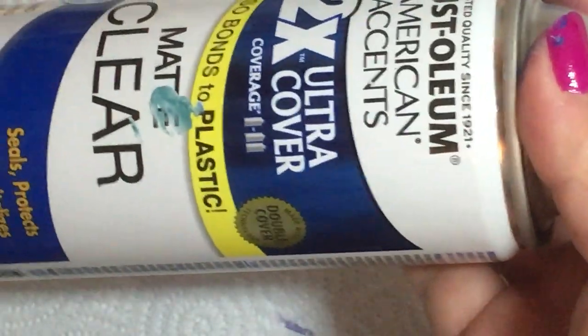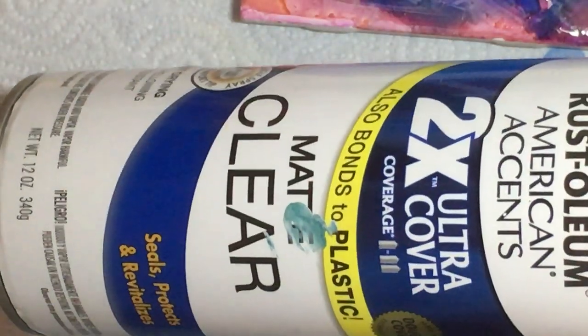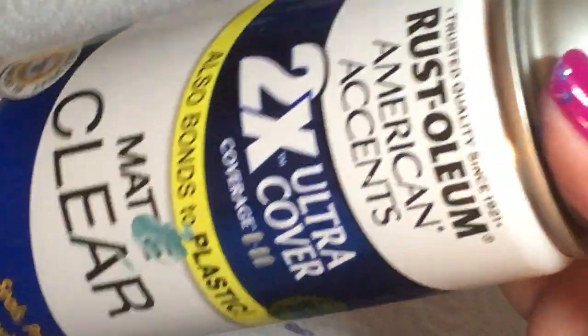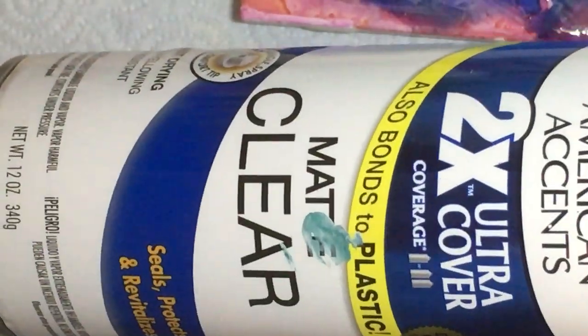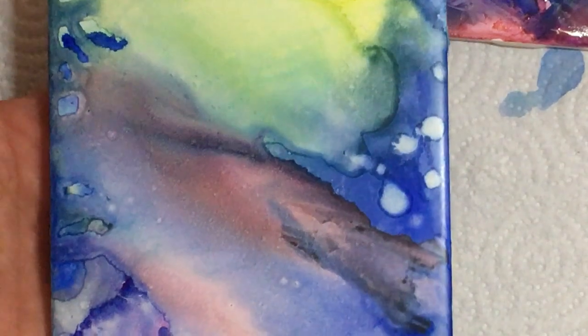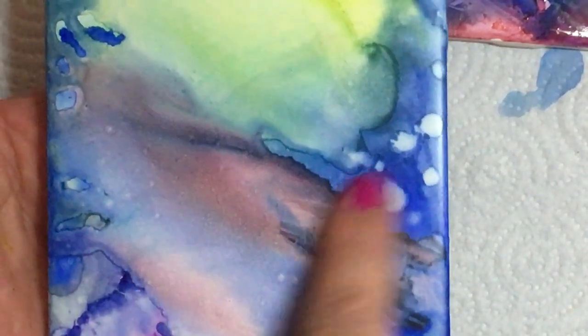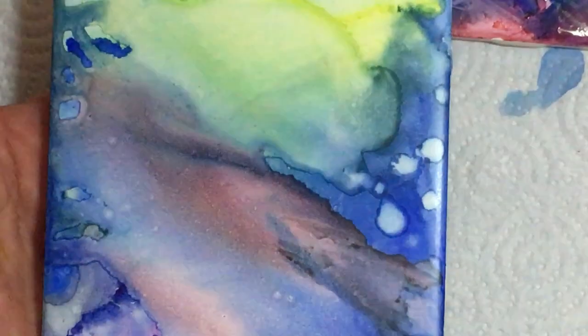And I sprayed it with this stuff here. That's 2X Ultra Cover Rust-Oleum Matte Clear. Now this is what I used. Probably any clear spray would work. And I did it on this one, and this one I'm already using as a coaster. I just did one coat. It does not come off.